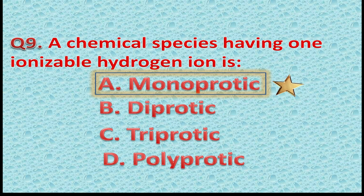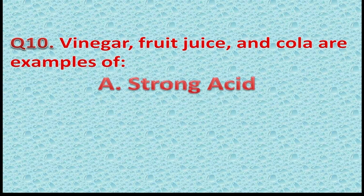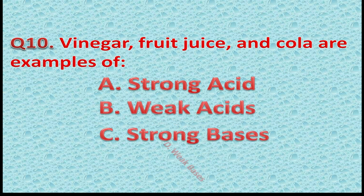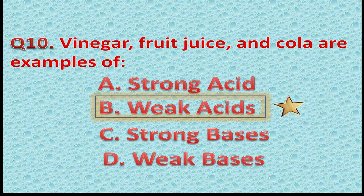Question 10: Vinegar, fruit juice, and cola are examples of — Option A: Strong acid. Option B: Weak acids. Option C: Strong bases. Option D: Weak bases. The correct answer is Option B — Weak acids. You got one more star if you gave this answer. If not, you got nothing.